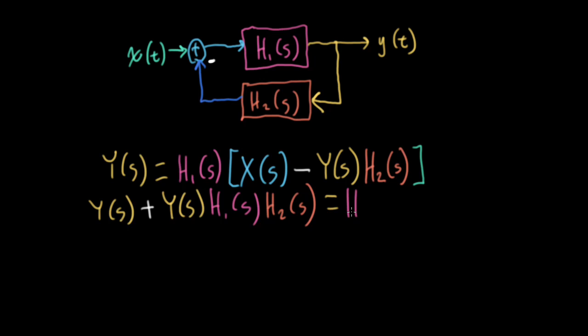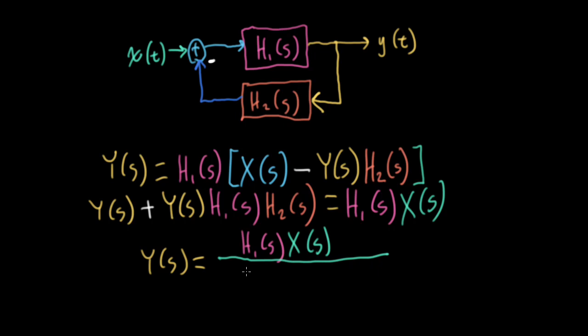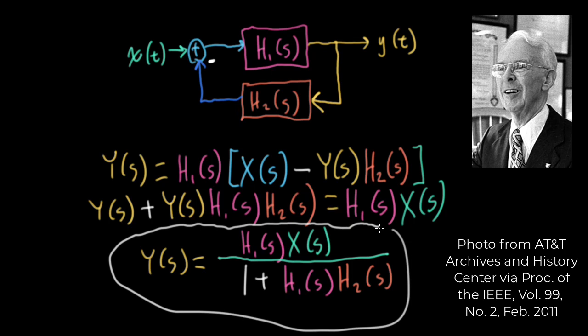So on the left, we can factor out Y(S) and write this thing as equal to H1(S) big X(S) all over the stuff we factored the Y(S) out of. So that's going to be 1 plus H1(S)H2(S). And this important formula is known as Black's feedback formula. And we're going to use this extensively throughout most of the rest of the course.